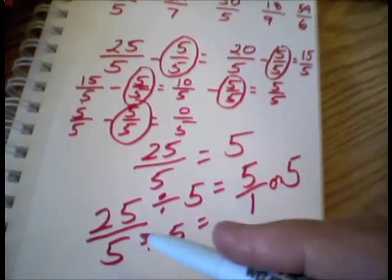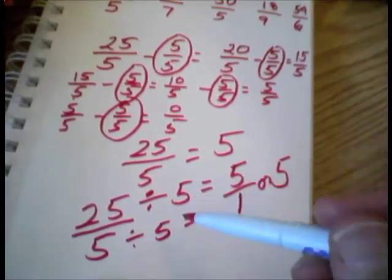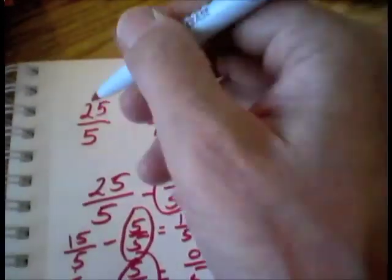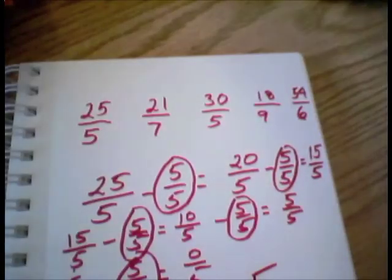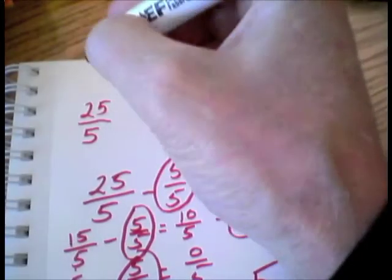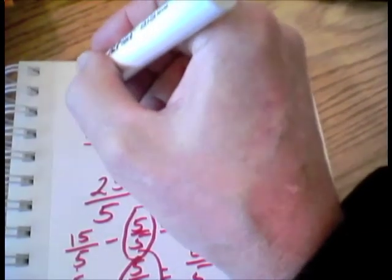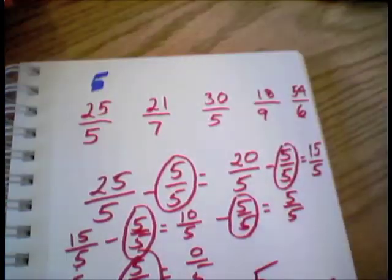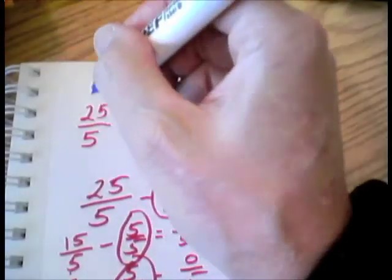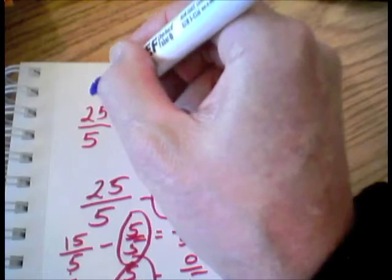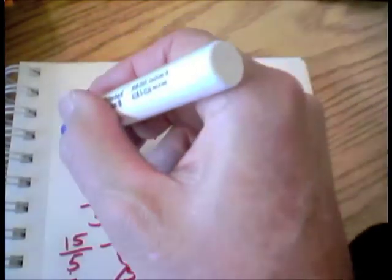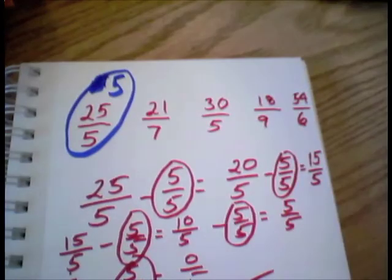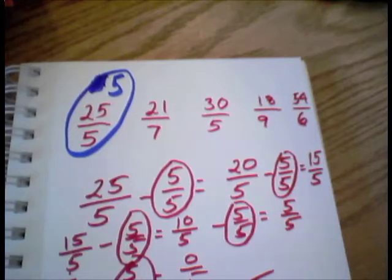So 25 fifths, we have just proven, equals 5. Let's go up here and keep track in another color. We'll write above here that this equals 5. Now we know that 25 fifths equals 5.